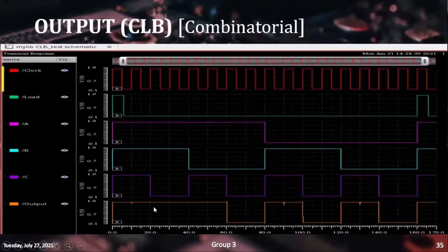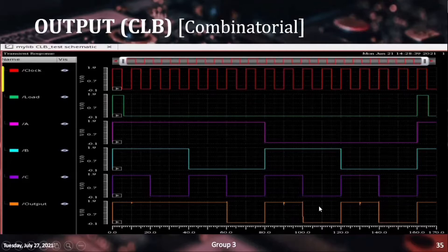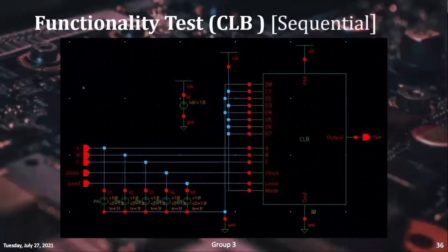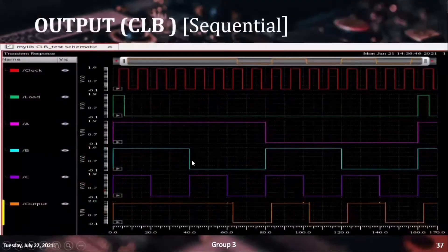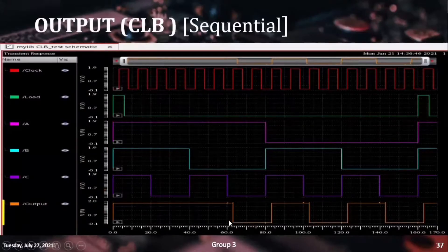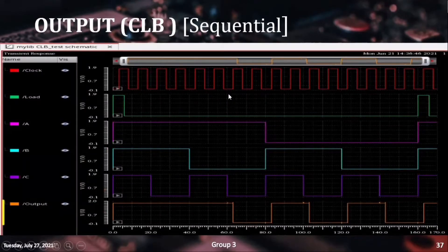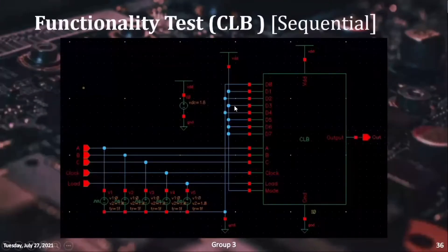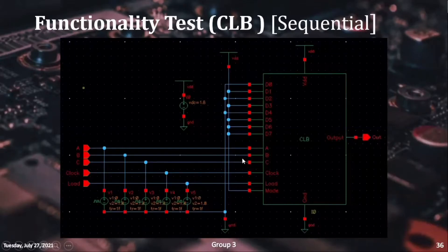In this graph, we can see that the CLB output follows the input instantly while in the combinatorial mode. After switching over to the sequential mode, we can see that the output now toggles only at the moment of a positive edge of the clock. By this, we can conclude that the CLB is working as desired.